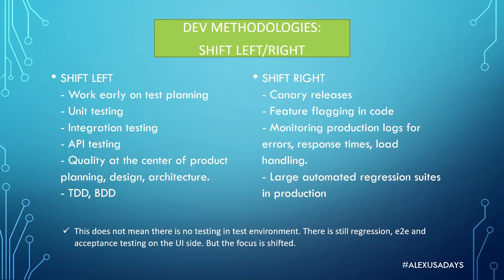The shift right idea also includes monitoring production logs for errors and response times, checking how production handles load, and creating automated regression suites in production. Testing runs after deployment — ideally scenarios should create data and then remove it, so your tests are clean and not adding any extra data into production aside from the test phase while they're executing.